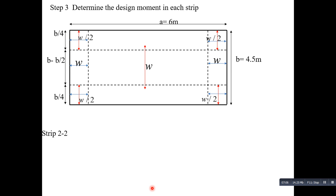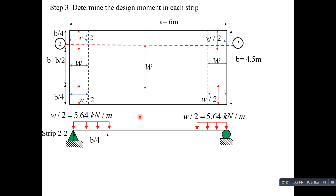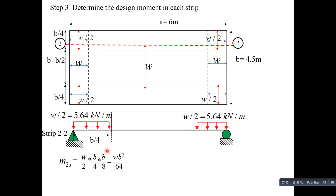Similarly, for strip 2-2 (the edge strips), the load in the x-direction is w/2. Taking a section, the moment M2x = (w/2) × (b/4) × (b/8) = wb²/64. Inserting numerical values gives a moment of 3.56 kN·m/m on the edge strip.